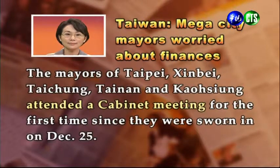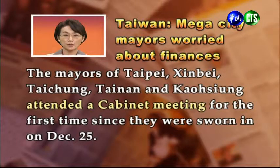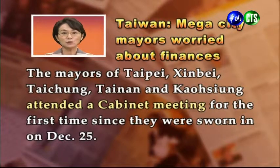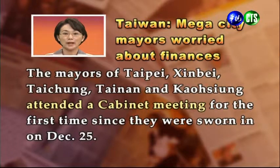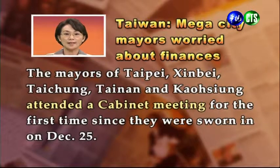The mayors of Taipei, 新北, 台中, 台南, 高雄 attended a cabinet meeting for the first time since they were sworn in on December 25th. 就在他們宣誓就職，自從12月25號宣誓就職之後，這是他們第一次參加內閣會議。For the first time就是第一次。這五個市長分別是台北、新北、台中、台南、高雄的市長。